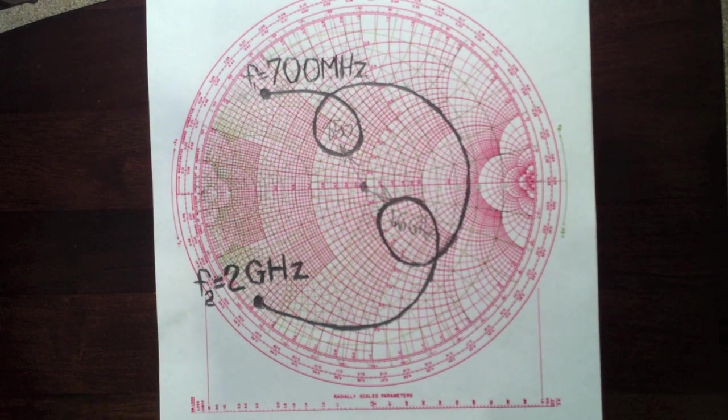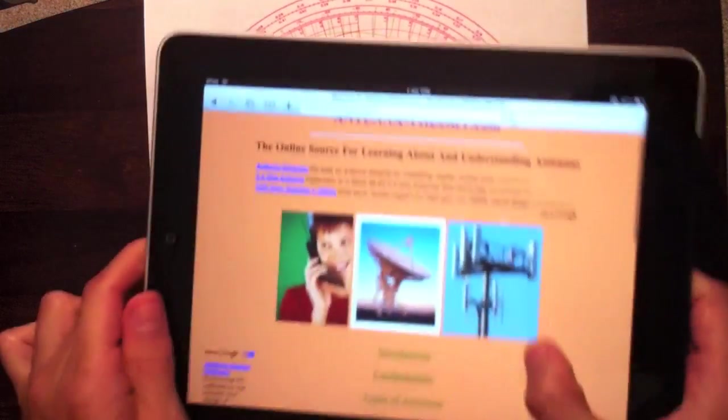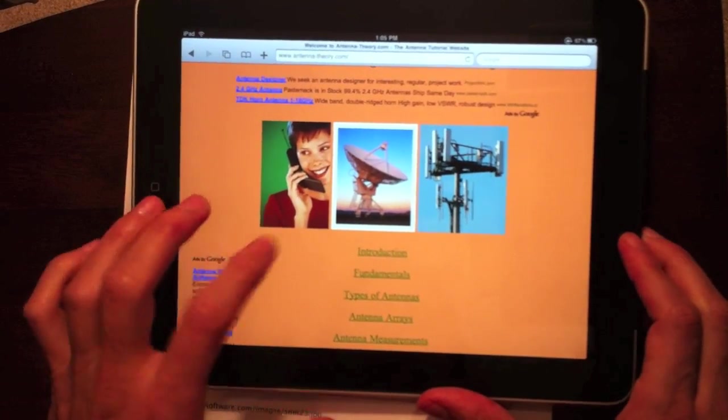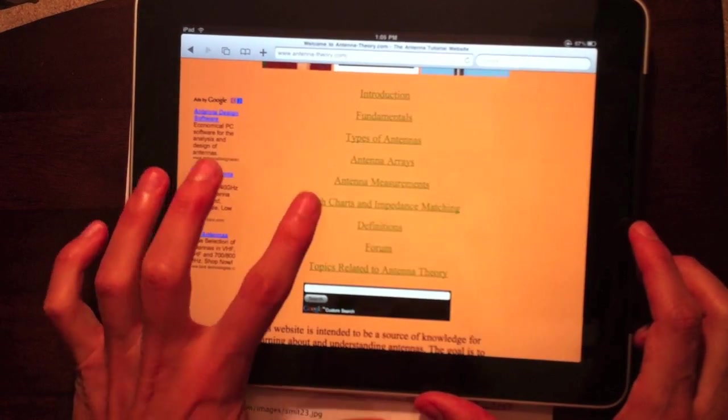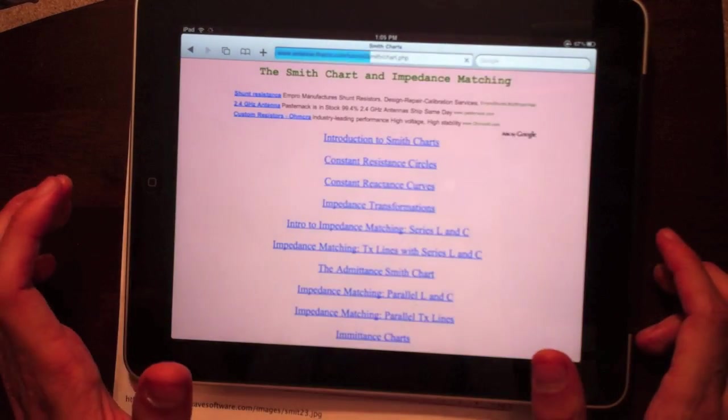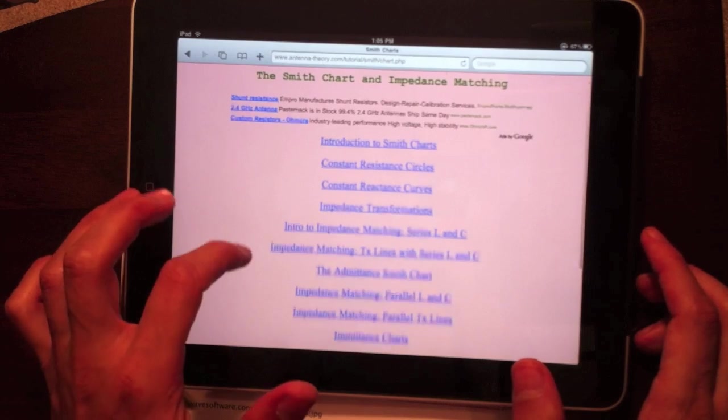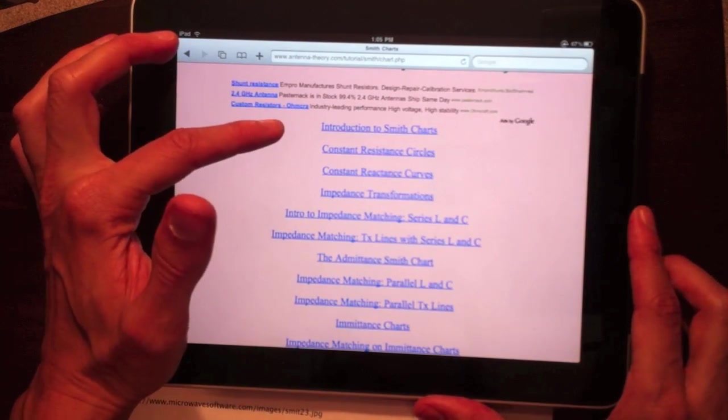So it would actually take a very long time to explain all that. So if you go to antenna theory.com, go down to Smith charts and impedance matching where I have this whole tutorial on this, where introduction to Smith charts,